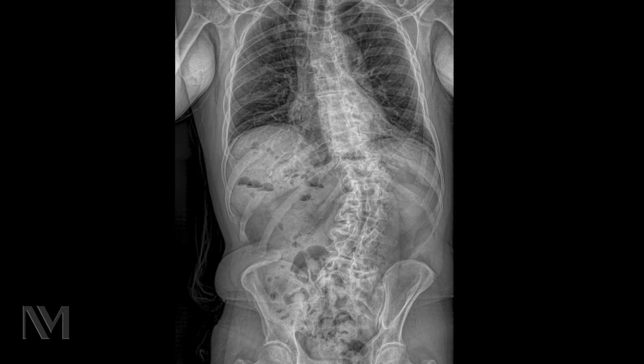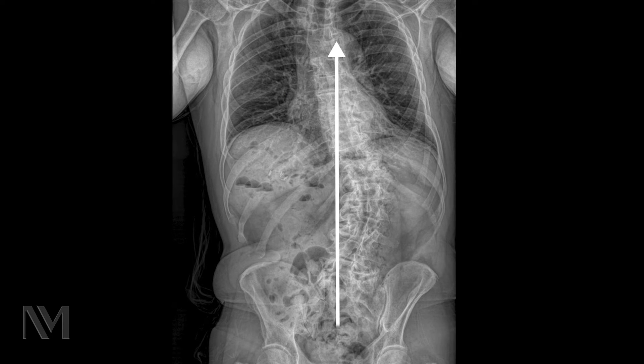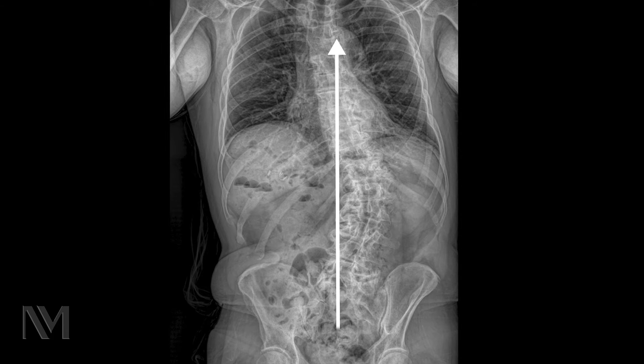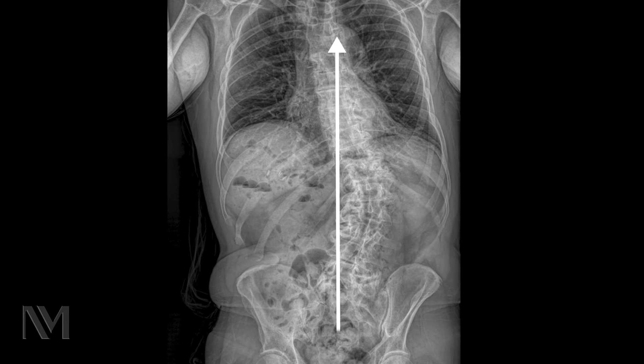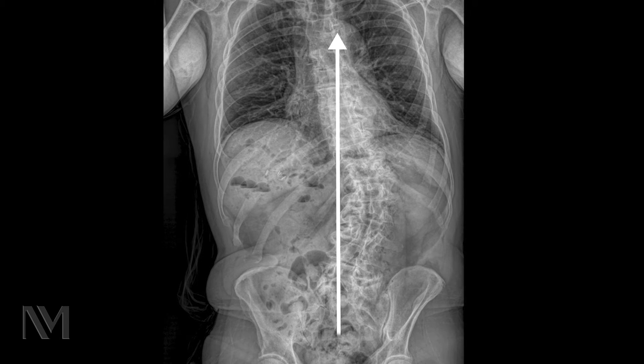When evaluating a patient with scoliosis, we obtain a number of different images. The one most commonly obtained is a 2D x-ray looking at the patient from the front and from the side. That allows us to determine how much of a curve they have and to what extent they have degeneration and other problems in their spine. On this image, you can see the spine is typically supposed to be a straight line when looking at it from the front. However, you can appreciate in this patient that the spine has an abnormal curvature.